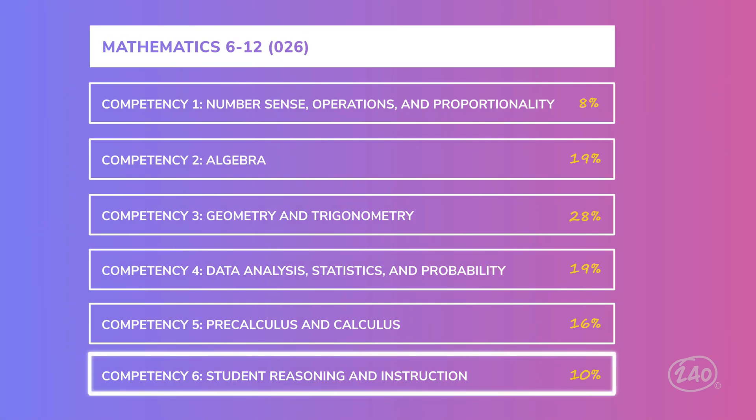We only have one competency left, competency six: reasoning and instruction. This skill is a little different from the others. It dives into mathematical instruction, assessment, and learning progressions. Now, you should be familiar with important terms regarding types of assessment. Luckily, I've got a list.